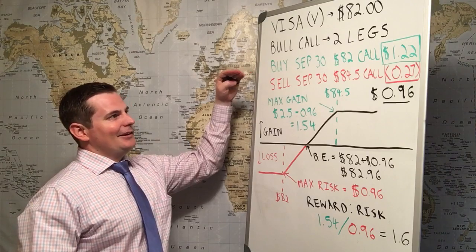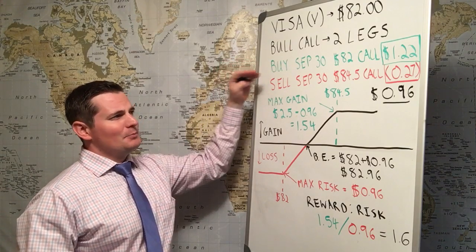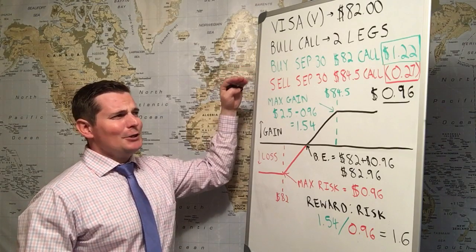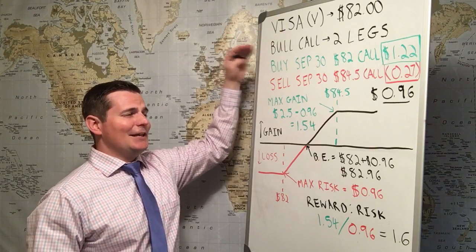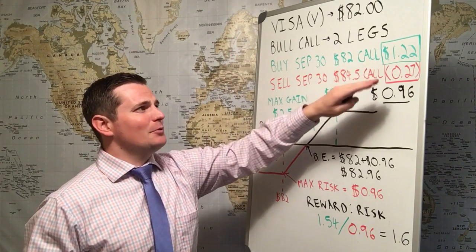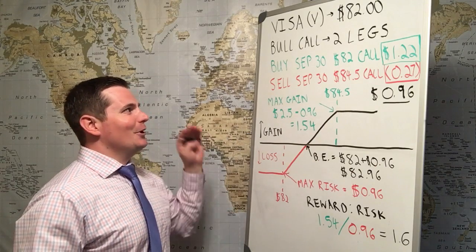The first leg in this particular trade was they bought the September 30th $82 call for Visa, and Visa is trading exactly at $82. This option was going for $122 on Friday.